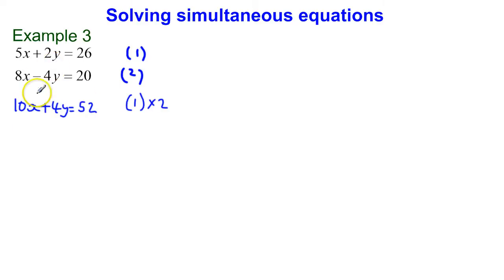And I'm going to write down equation 2 underneath this. So we've got 8x take away 4y is equal to 20. So my coefficients of y here are the same, but one of them is a plus and one of them is a take away.